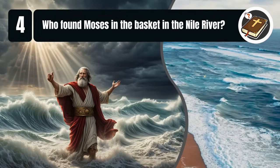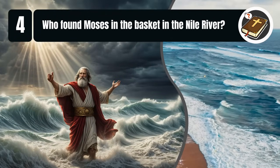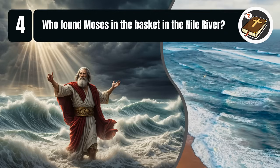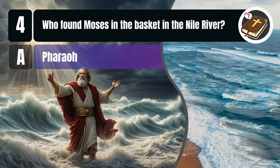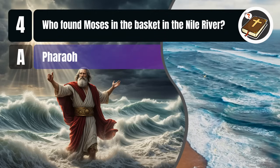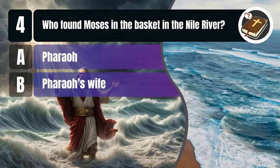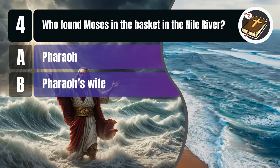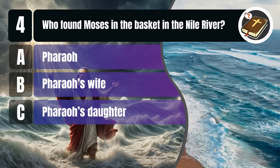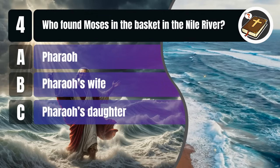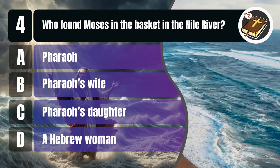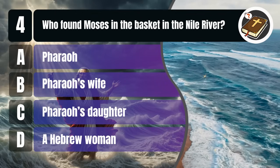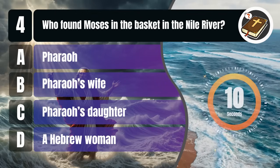Question 4. Who found Moses in the basket in the Nile River? A. Pharaoh, B. Pharaoh's wife, C. Pharaoh's daughter, D. A Hebrew woman. You get 10 seconds.